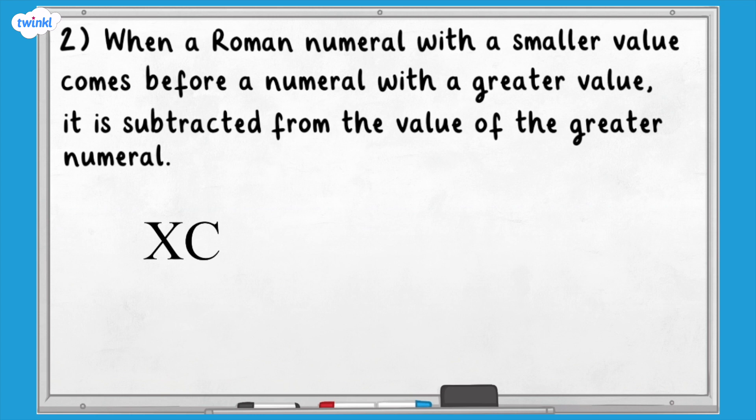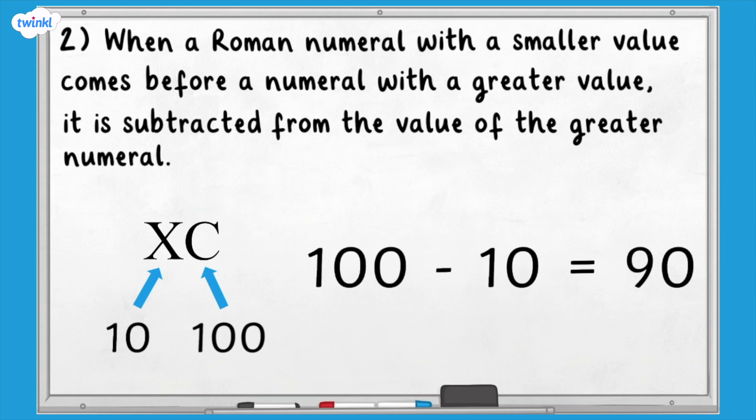For example, in the Roman numeral XC, X represents 10 and C represents 100. X has a smaller value than C, so the 10 is subtracted from the 100. 100 subtract 10 equals 90, so XC represents 90.